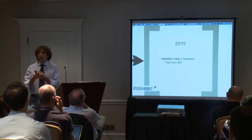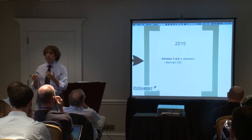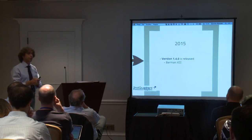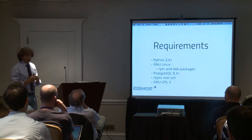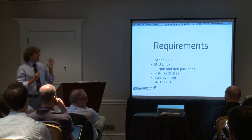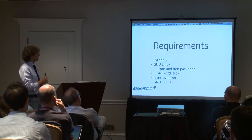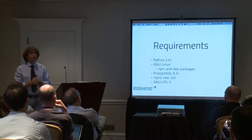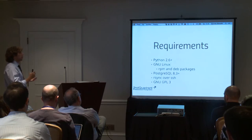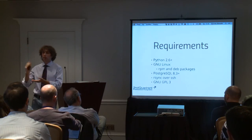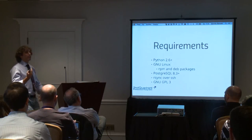We just came out with Barman 1.4.0, which is the thirteenth version of Barman, meaning that every quarter we are releasing a new version. Barman is written in Python, requires the GNU GPL3 license, and 2ndQuadrant maintains packages for both Red Hat and Ubuntu/Debian Linux. We support and test Postgres from 8.3 onwards, and currently it is only based on RSync over SSH.